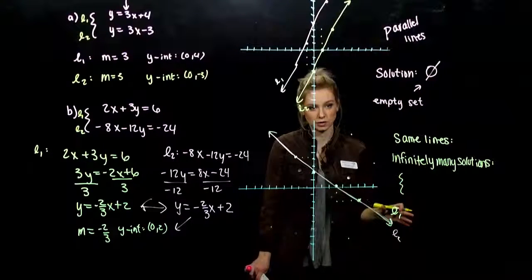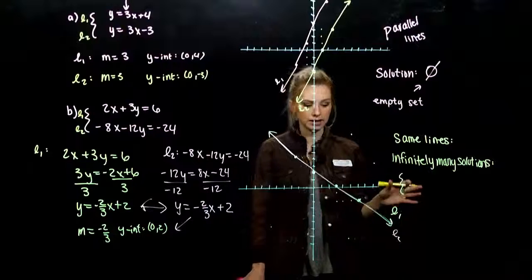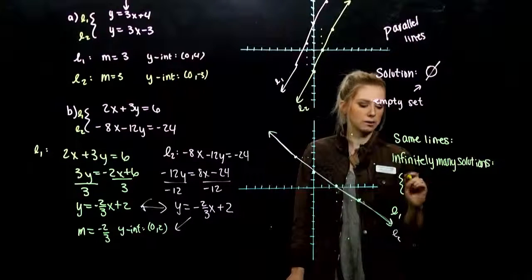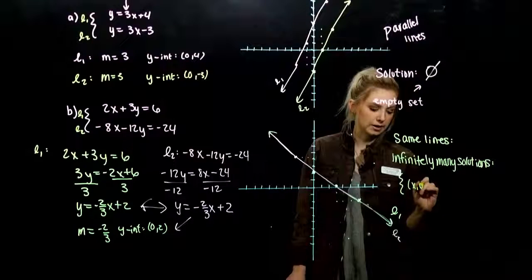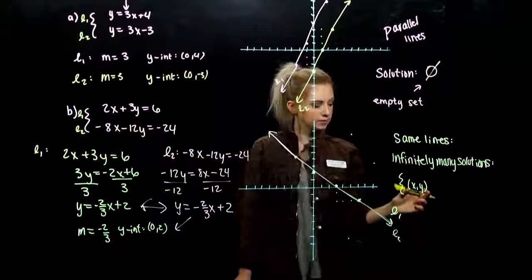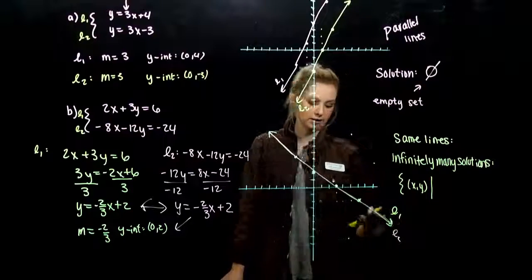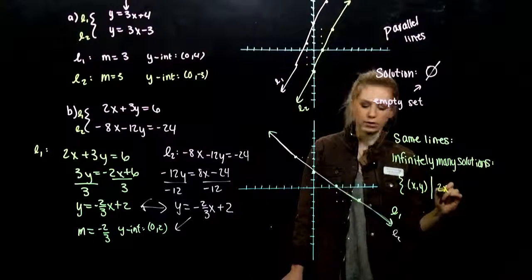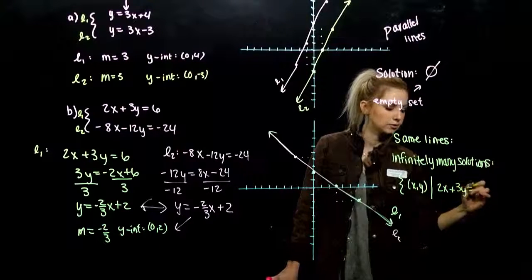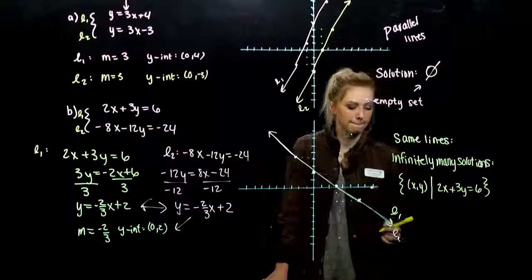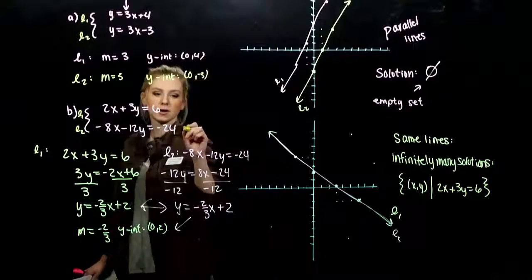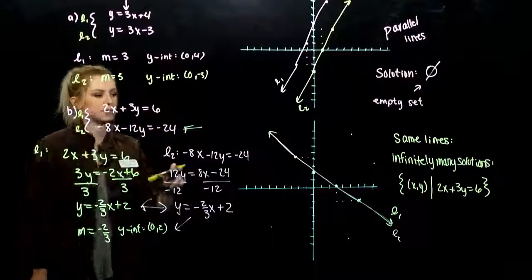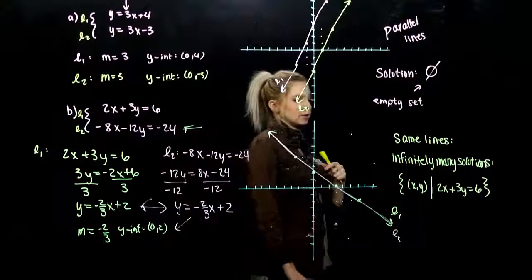So our set notation for that. We've dealt with the one-dimensional set notation. Now we're looking at two-dimensional. So instead of just having an x or a y, we're looking at coordinate pairs. So the set of all the points, such that they have to lie on this line. So they have to follow the rule 2x plus 3y equals 6. This form is also equivalent, since they are exactly the same line. But we want to have the most simplified version in that set notation.